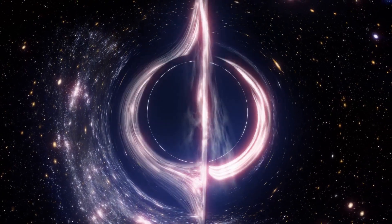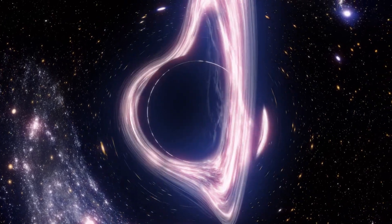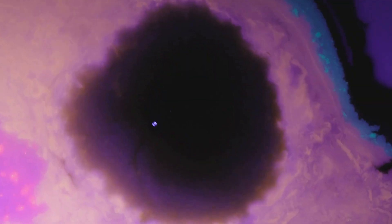This process results in an object with a gravitational field so strong that it warps the fabric of space and time around it. Both neutron stars and black holes are fascinating objects that continue to intrigue astronomers.